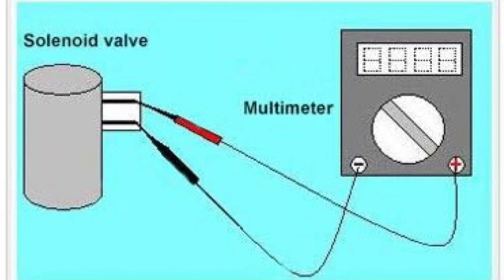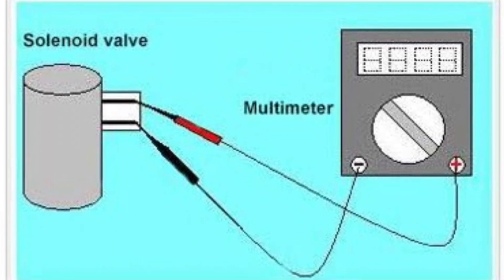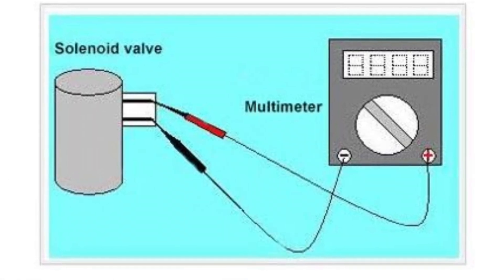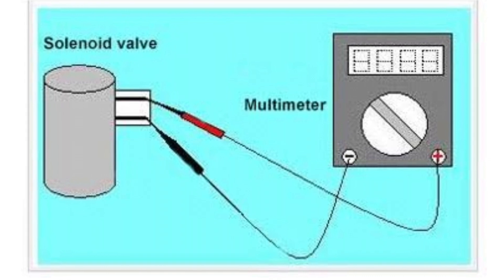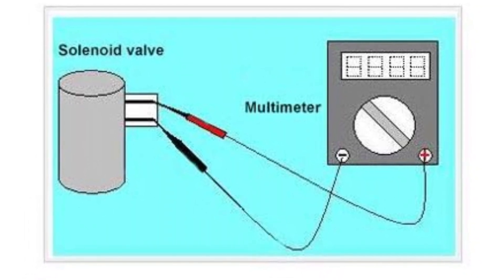When testing a solenoid with a multimeter, you have to touch the solenoid terminals with the black and red leads of the multimeter. The black lead must be connected to the negative terminal. In contrast, the red lead needs to be connected to the positive terminal.